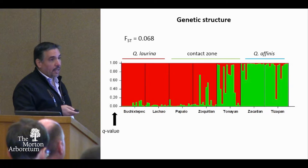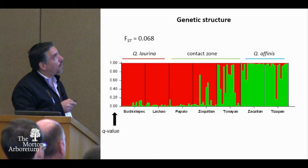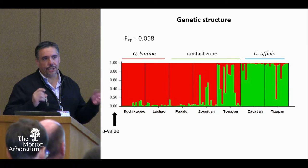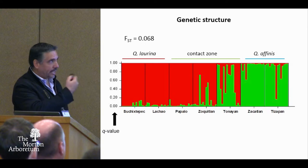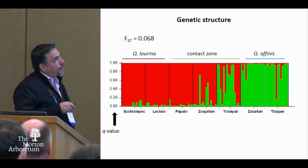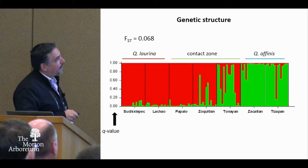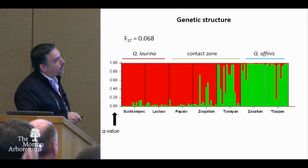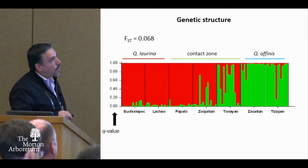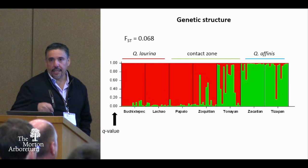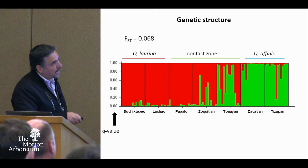Now the results. Using the nuclear microsatellites, we first saw a low but significant FST, meaning populations are basically sharing most of the genetic variation. Differentiation is not very high, but this is very common among oak species. The assignment analysis indicated two main genetic groups: the red group found in Quercus laurina populations, and the green genetic group occurring with higher frequency in Quercus affinis populations. We have a transition zone where both genetic groups are intermixed, with some admixture individuals. Genetically intermediate individuals occur in the contact zone populations, and a few even outside.